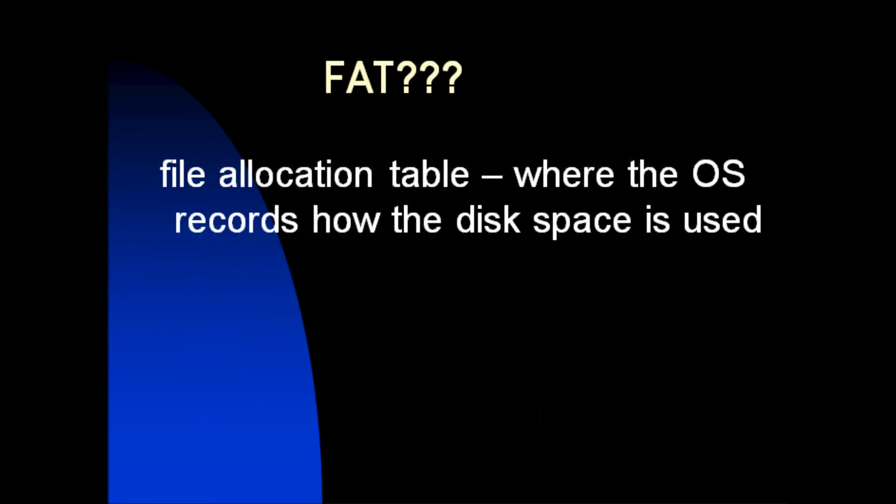FAT — what is a FAT? File Allocation Table. It is where the operating system records how the disk space is used.